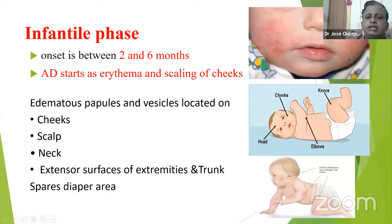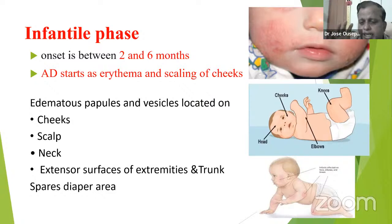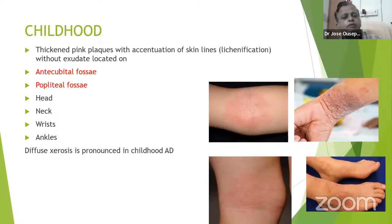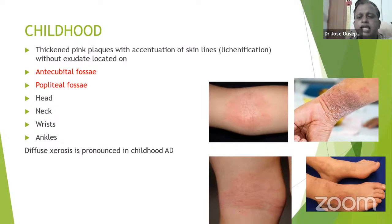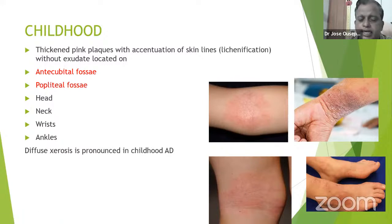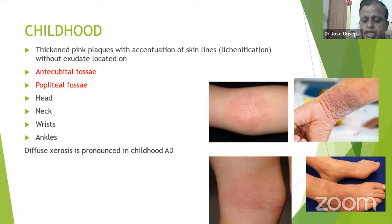An important differentiating factor: the diaper area is usually spared in Atopic Dermatitis. If there is a lesion in the diaper area, you should be cautious about labeling the child with Atopic Dermatitis. Childhood Atopic Dermatitis (2–12 years) presents with thickened plaques, lichenified skin lesions, and excoriations located in the antecubital and popliteal areas. It can also affect the head, neck, wrists, and ankles, with diffuse xerosis and dryness of skin.